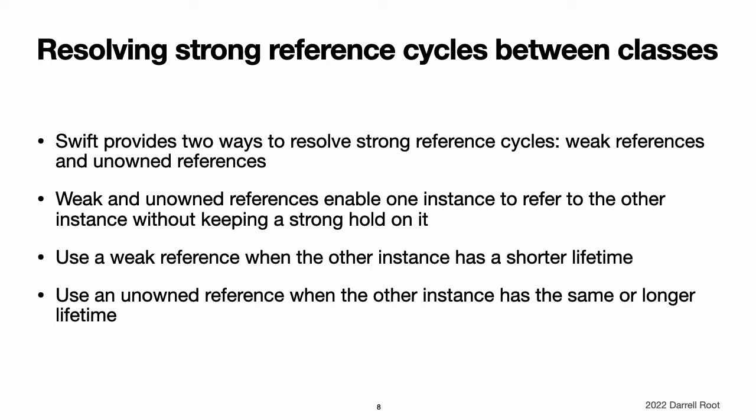Resolving strong reference cycles between class instances. Swift provides two ways to resolve strong reference cycles when you work with properties of class type: weak references and unowned references. Weak and unowned references enable one instance in a reference cycle to refer to the other instance without keeping a strong hold on it. The instances can then refer to each other without creating a strong reference cycle. Use a weak reference when the other instance has a shorter lifetime — that is, when the other instance can be deallocated first. In contrast, use an unowned reference when the other instance has the same lifetime or a longer lifetime.